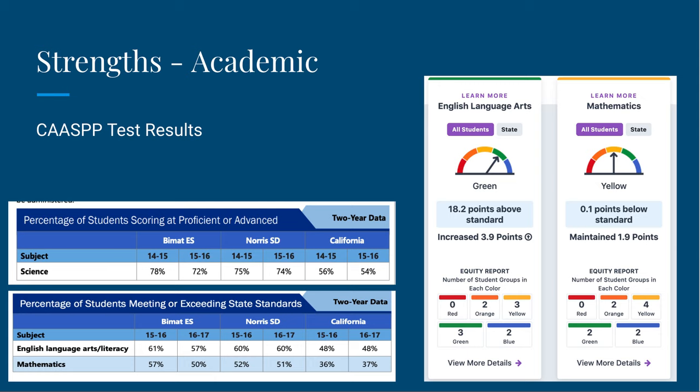One strength I noticed in the Norris School District is their testing results. The school district as a whole is testing above average for English language arts and almost on target for math. For English, they are in the green scoring area with 18.2 points above standard, and for math they are in the yellow scoring area with only 0.1 point below standard. These statistics are very impressive and show that they are doing a great job with what they are implementing for academics.